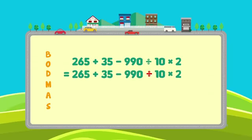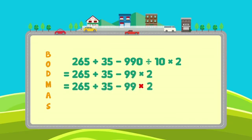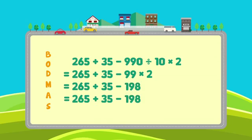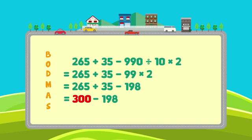First, we need to perform division: 990 divided by 10 gives us 99. Followed by multiplication: 99 multiplied by 2 gives us 198. On addition, the sum of 265 and 35 is 300. And finally, subtracting the two numbers, we get 102.